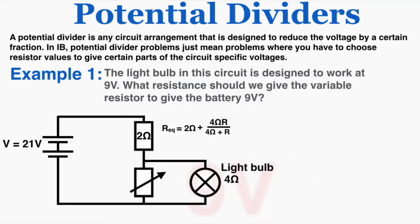I know the light bulb needs 9 volts, and because it's in parallel with the variable resistor, that means the variable resistor also receives 9 volts. Because this 9-volt drop is in series with the 2 ohm resistor, those two voltages must add to 21 volts. So the voltage across the 2 ohm resistor is 12 volts. Using V = IR, I can find that the total current through the 2 ohm resistor is 6 amps.